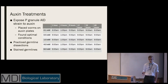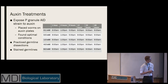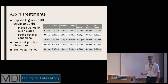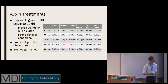After we isolated our AID strain, we exposed them to our inducer molecule, auxin. We did this at varying concentrations and for varying amounts of time, and then we were able to dissect out the germline and stain for presence or absence of our target protein. This is very preliminary, but what we found was that a four millimolar concentration of auxin for four hours is sufficient to see the results I'm about to show you.